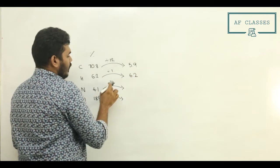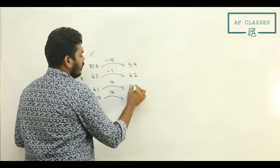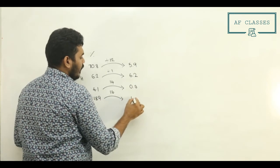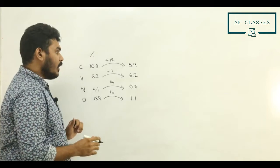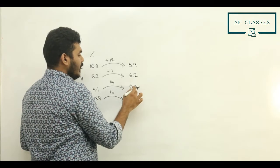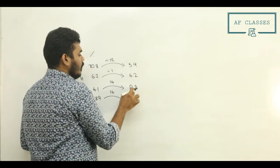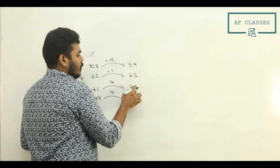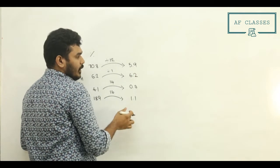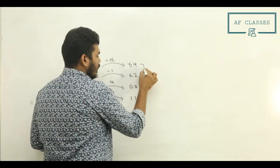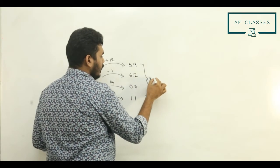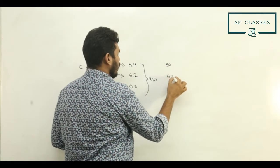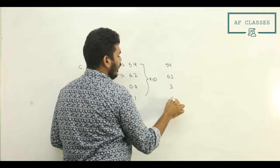Continuing: 4.1 divided by 14 gives approximately 0.3, and 18.9 divided by 16 gives approximately 1.1. This gives us the number of moles. We now have the values: 5.9, 6.2, 0.3, and 1.1. We divide all by the smallest value.